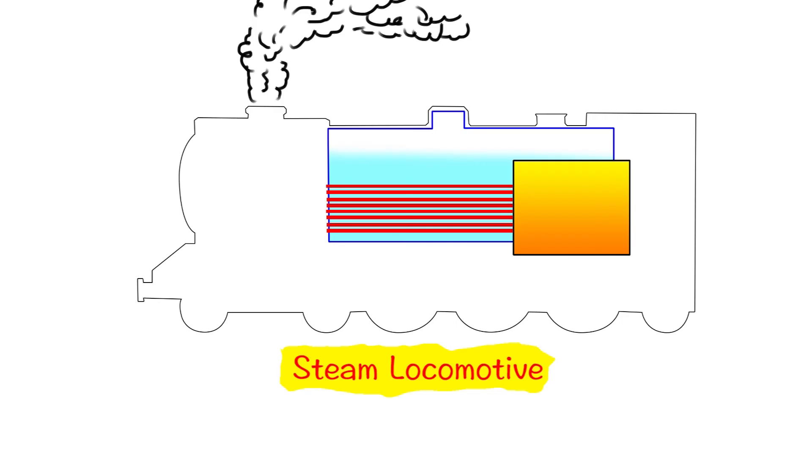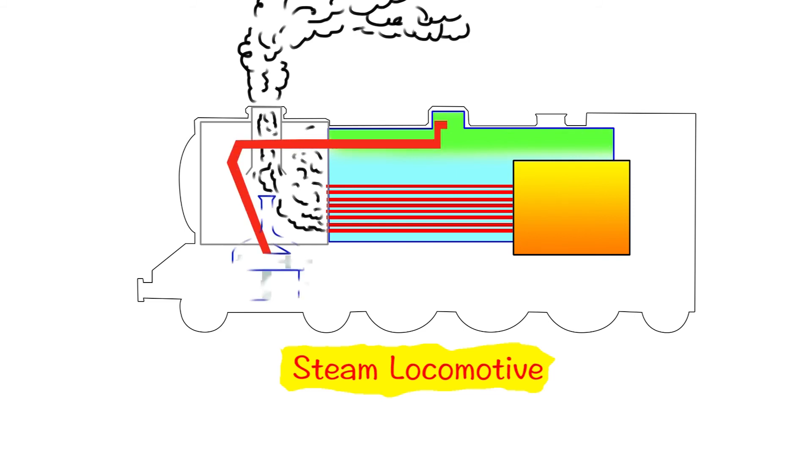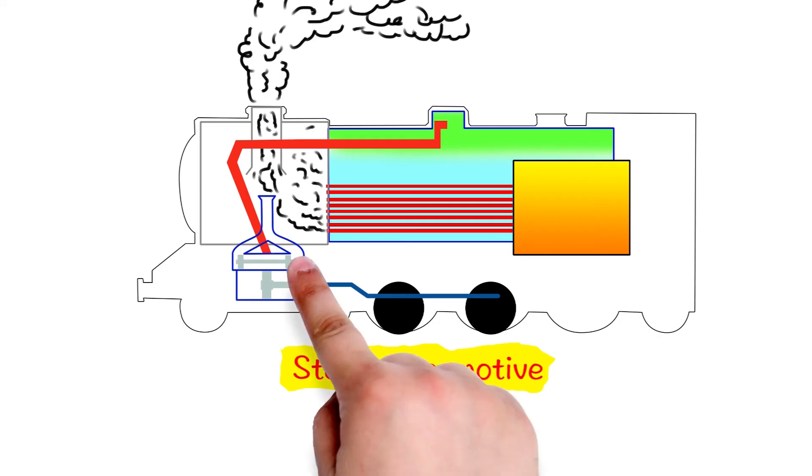Now we have boiled the water and the steam is coming up. The steam will be collected and directed through pipes to push against the piston. The piston is connected to the wheels of the train, so when the piston moves, the train will move also. Through a special valve, the steam will be directed to the opposite sides of the piston to keep the wheels moving and the train going.